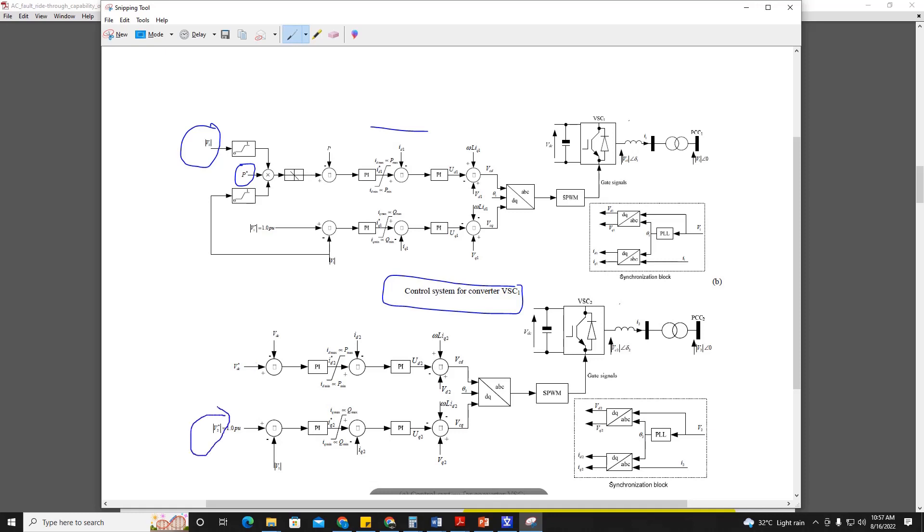If there happens any change, any dip, any interruption in AC voltage at point of common coupling, then accordingly the changes will be made into the active power reference to ensure that fault ride-through technique is happening. Here we can see that converter station 2 is responsible to control the DC voltage, so this is the outer loop control for DC voltage and AC voltage, whereas converter station 1 is responsible for controlling the active power and AC voltage. Changes in active power will be made depending upon the point of common coupling voltage at converter station 1 V1 and converter station 2 V2. So if there will be some problem, accordingly the power will be adjusted.